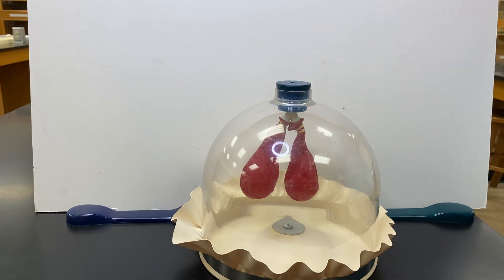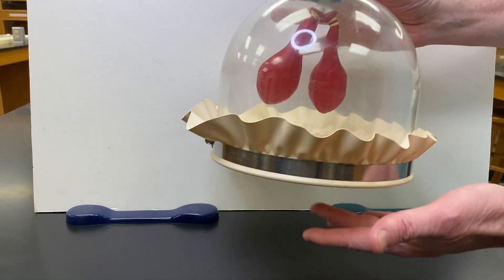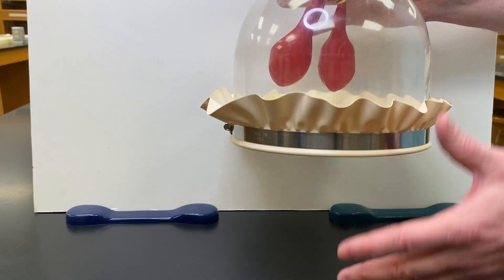In us, the pleural cavity is filled with pleural fluid, but here it's air. This rubber sheet at the bottom represents the diaphragm.